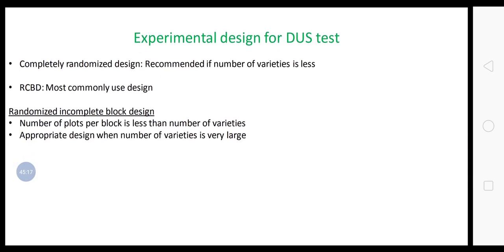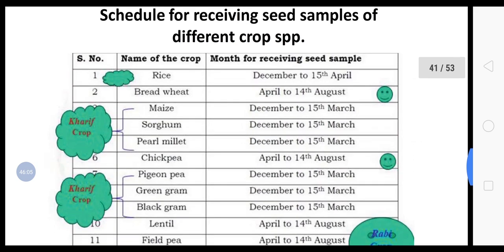For experimental designs in DUS testing — conducted strictly under field conditions — the most popular experimental design is RCBD (Randomized Complete Block Design). Another is Lattice Design; nowadays Alpha Lattice Design is most popular. A third is Randomized Incomplete Block Design (RIBD), used when the number of plots per block is less than the number of varieties — an appropriate design when the number of varieties is very large.